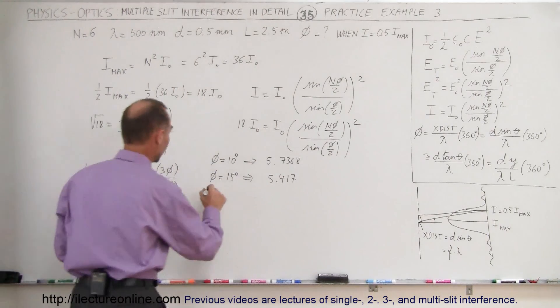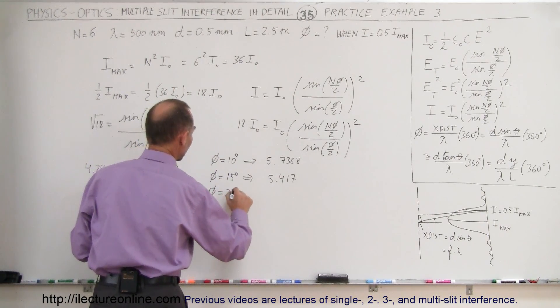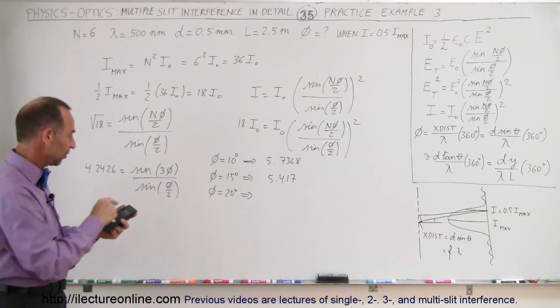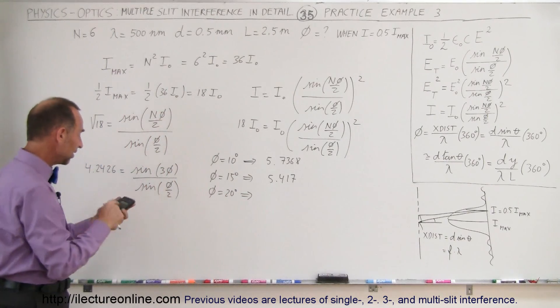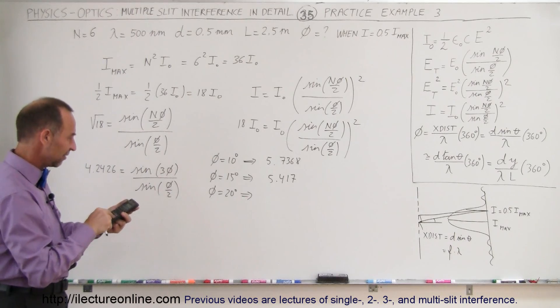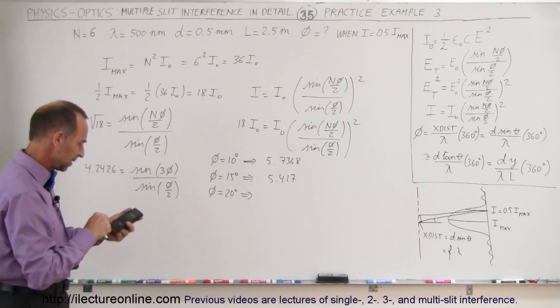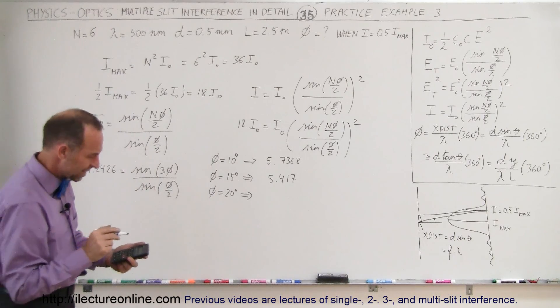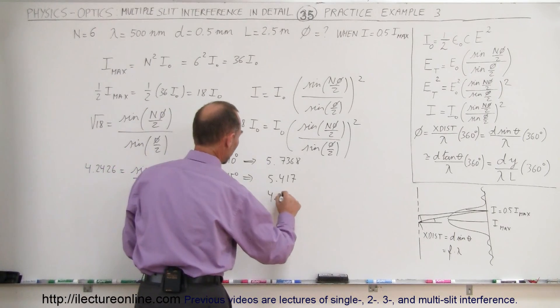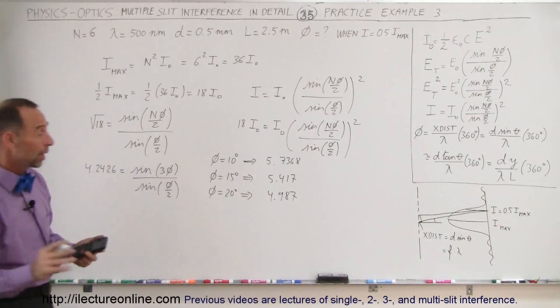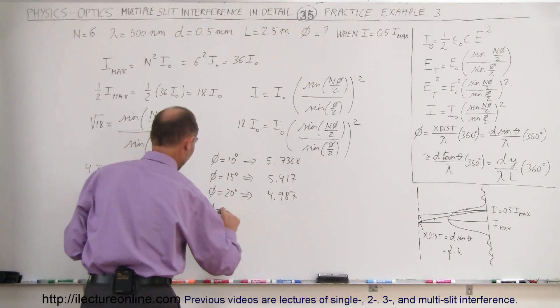Let's try 20 degrees. So I take 60, so 20 times 3 is 60, so I take sine of 60 divided by sine of 10, and I get 4.987, which is getting closer, but not quite where we want to get to.